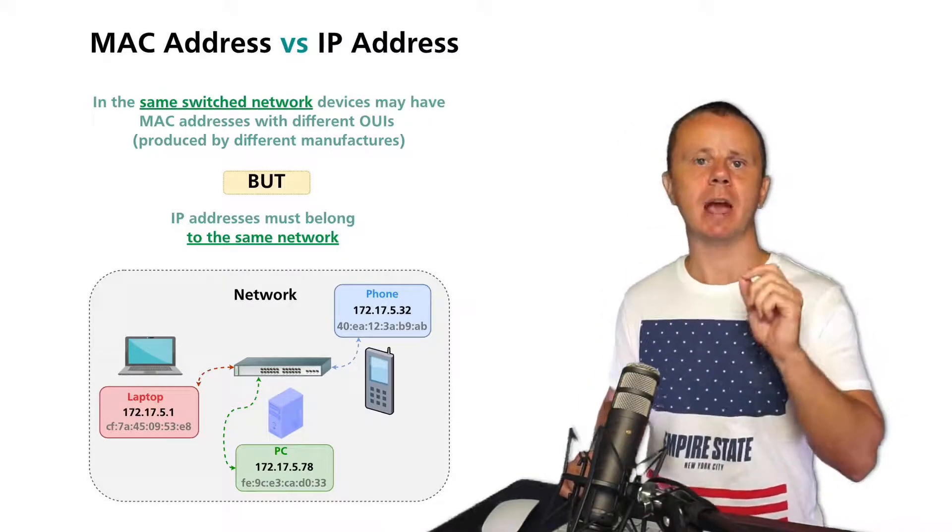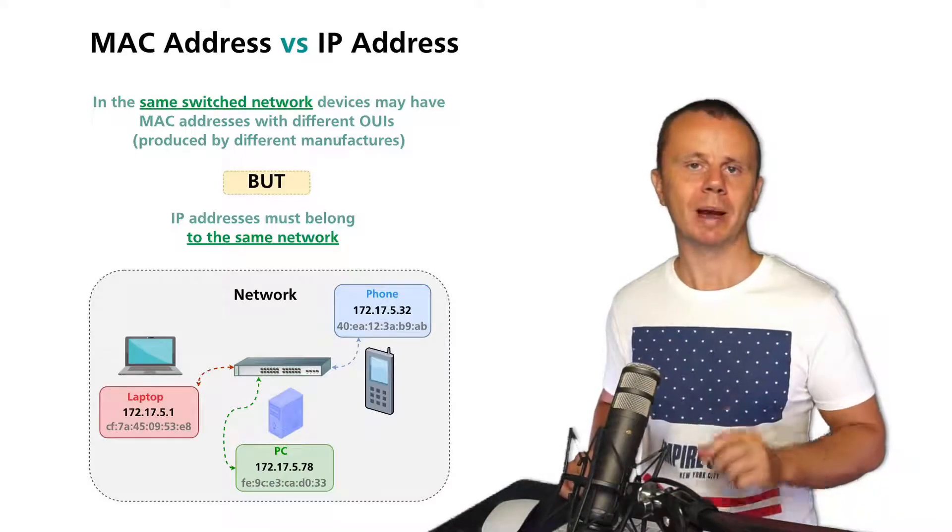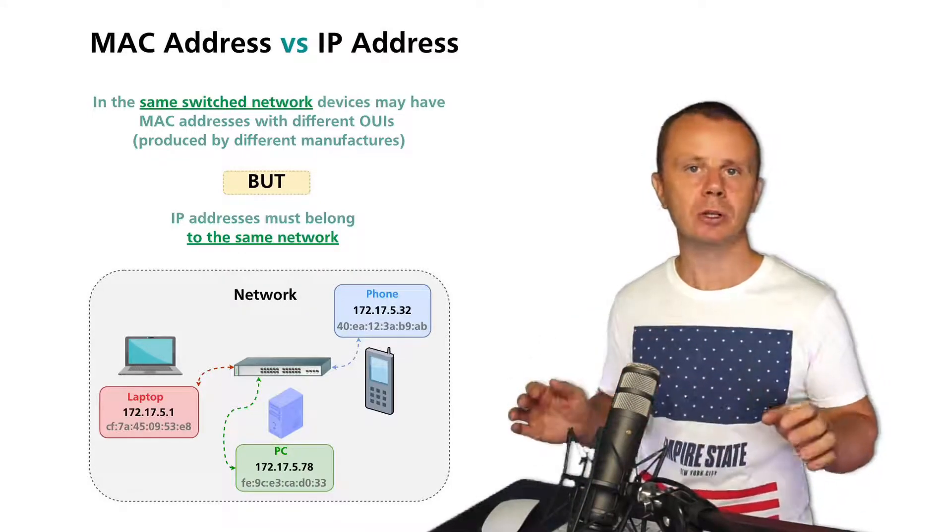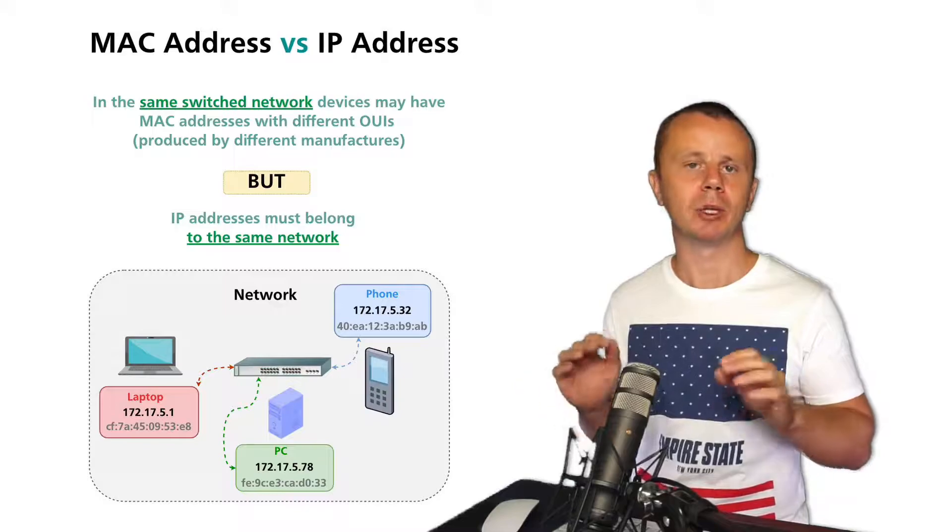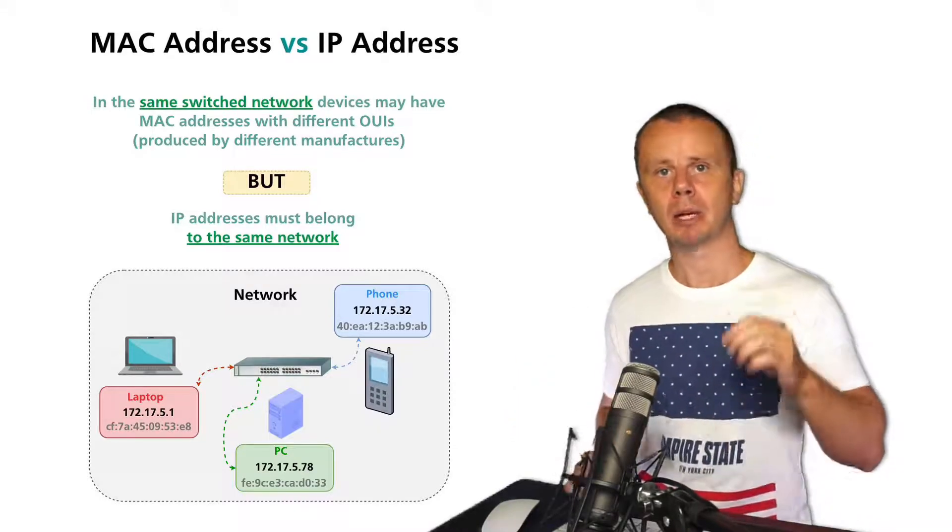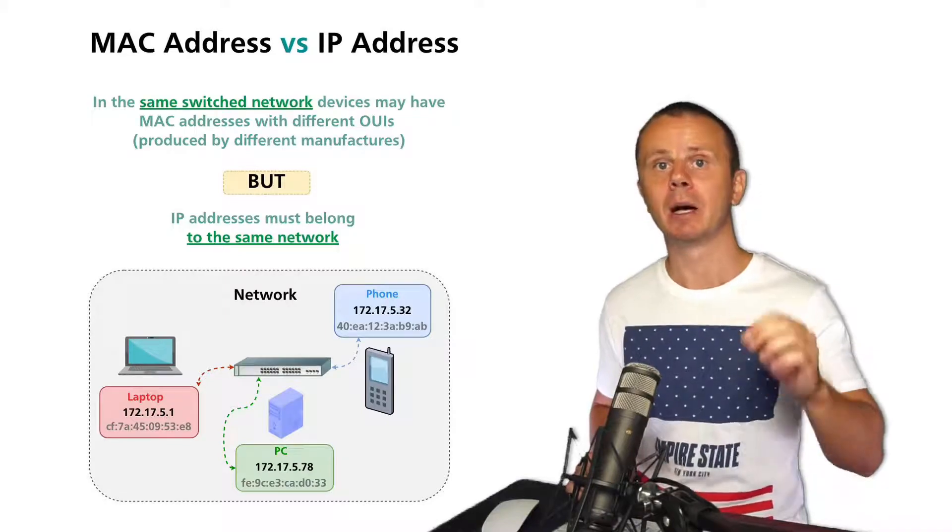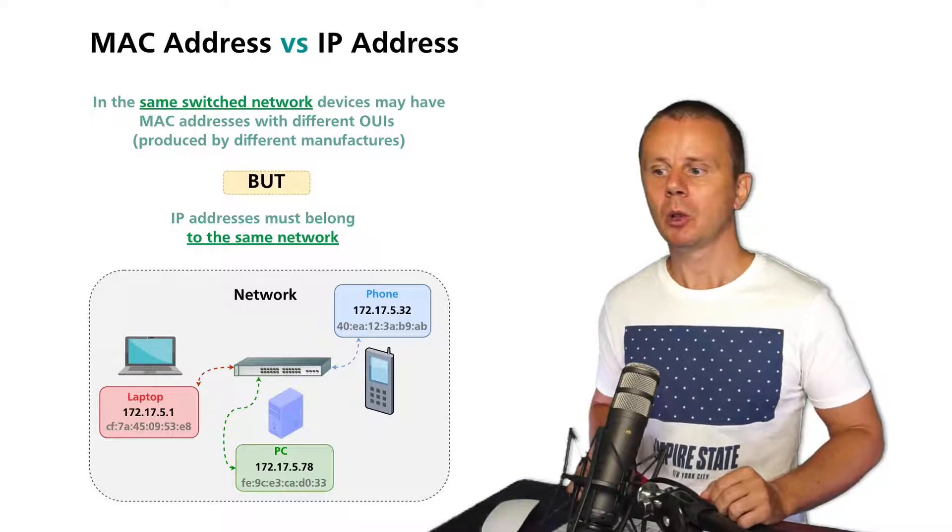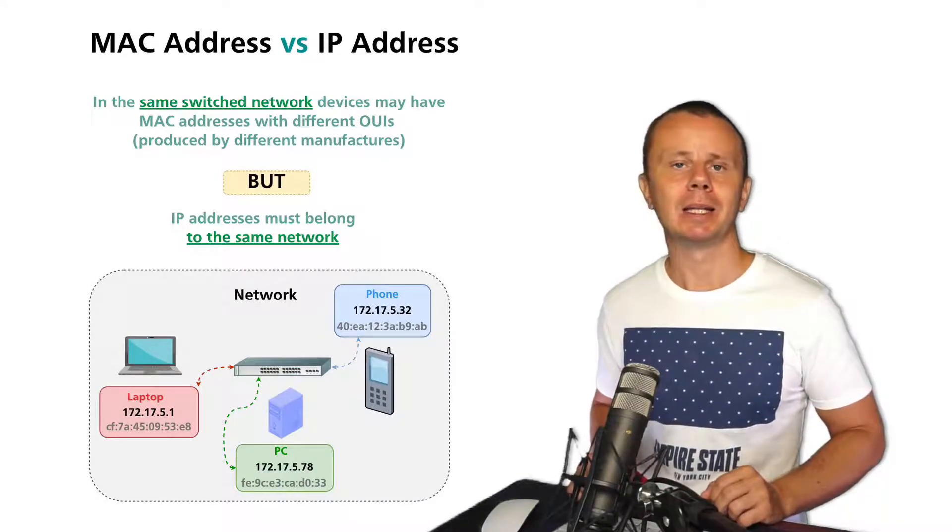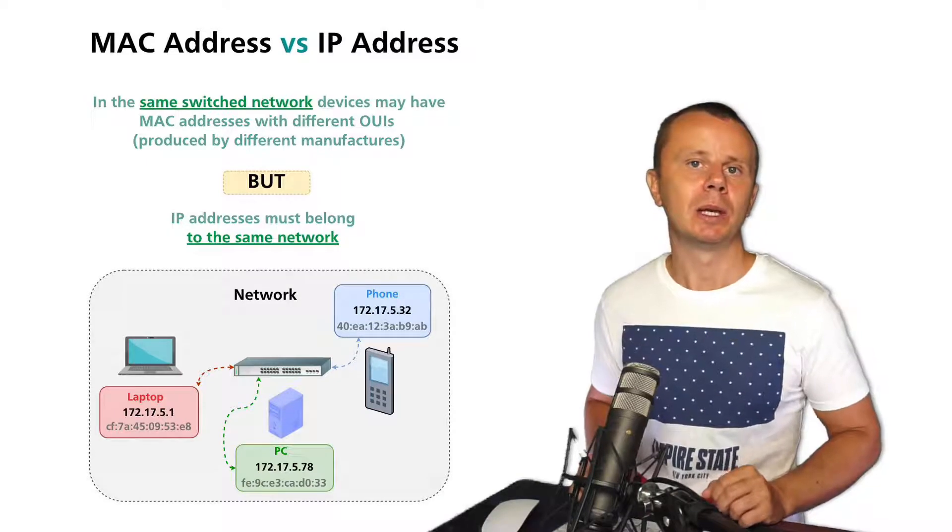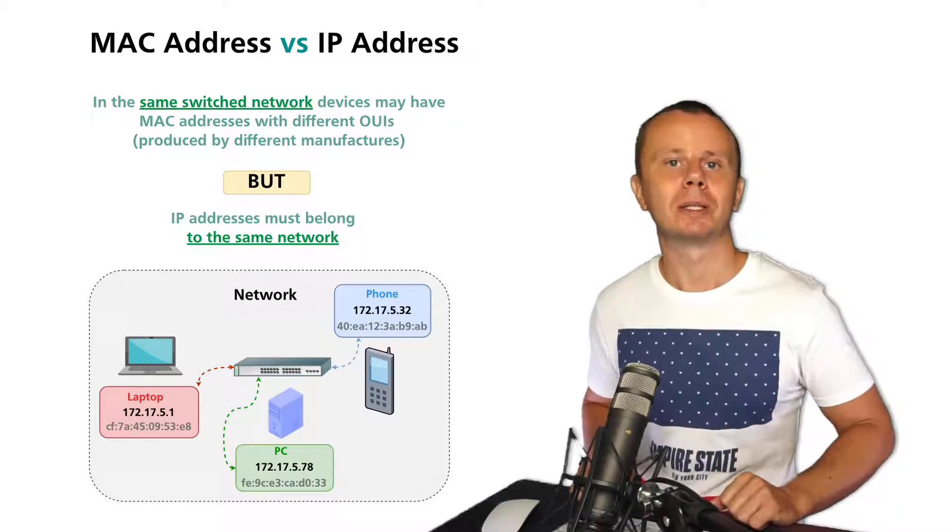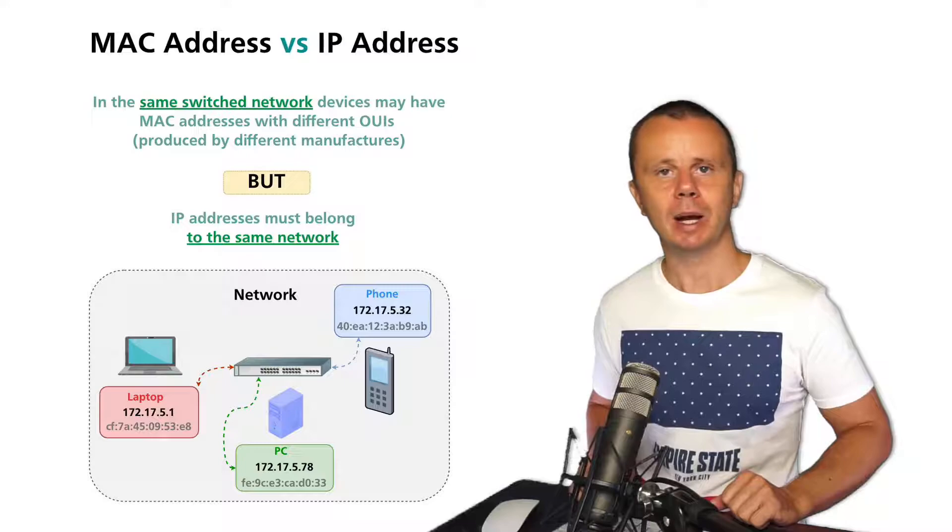Please keep in mind this very important point: MAC addresses may be from different manufacturers and it doesn't impact the communication between devices, but IP addresses in the switched network must be from the same logical network. All right, let's next proceed and I'll explain the difference between unicast, multicast, and broadcast IP addresses. I'll see you guys after a small pause.